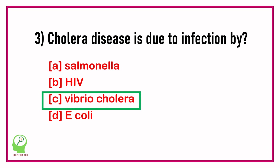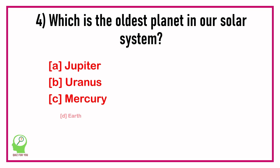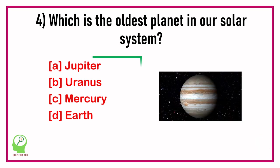Question number four: Which is the oldest planet in our solar system? Options are: Jupiter, Uranus, Mercury, Earth. Answer: Jupiter.